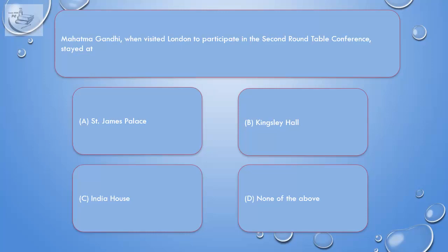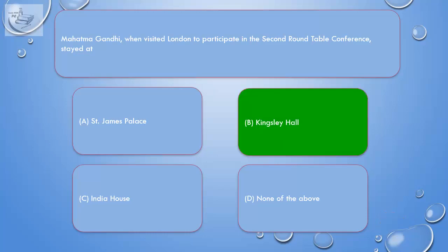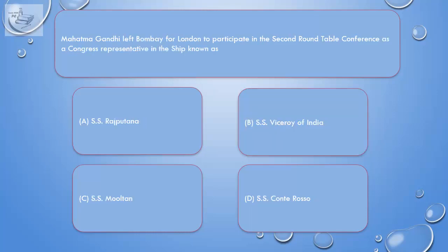Question: When Mahatma Gandhi visited London to participate in the second Round Table Conference, he stayed at: A. St. James Palace, B. Kingsley Hall, C. India House, D. None of the above. Correct answer is B. Kingsley Hall.